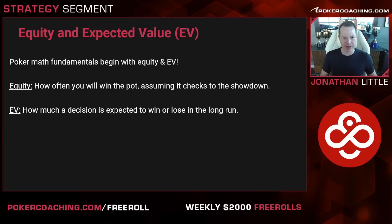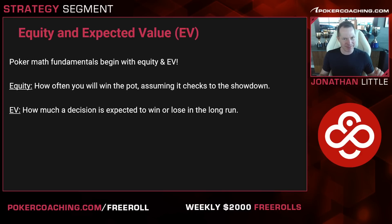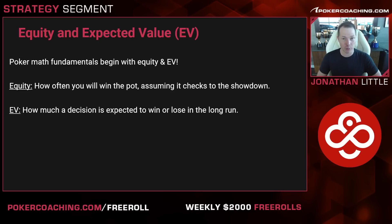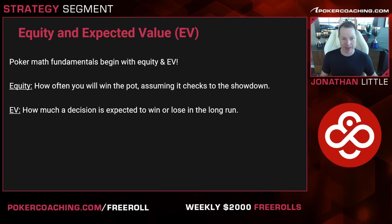All poker math fundamentals begin with equity and expected value. These two concepts are similar but a little bit different. Equity is how often you will win the pot, assuming you get to the showdown. For example, say you have ace-king and I have 9-7. In this situation, the ace-king is going to win about 64% of the time. That means you have 64% equity and I have 36% equity.